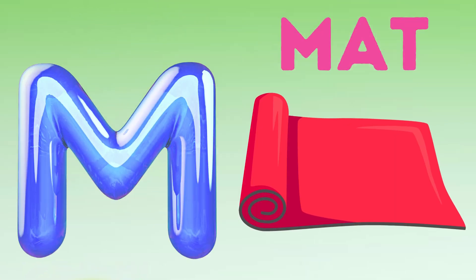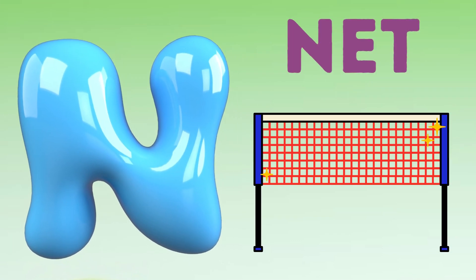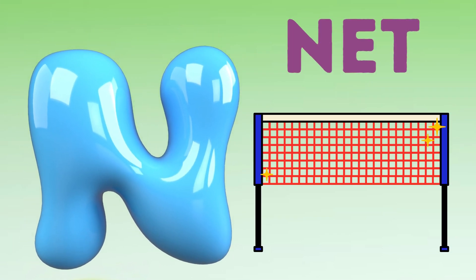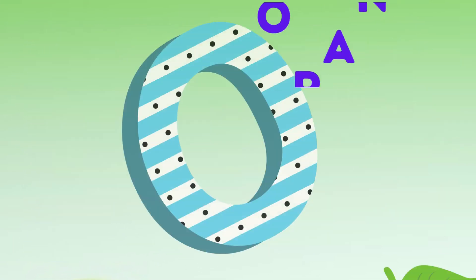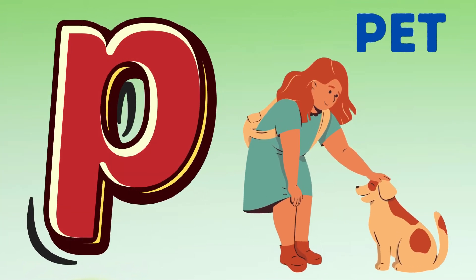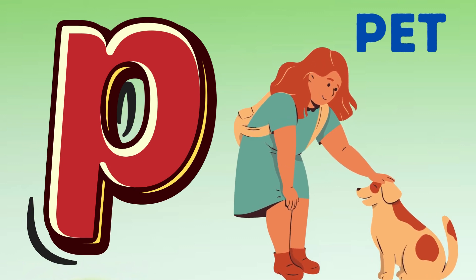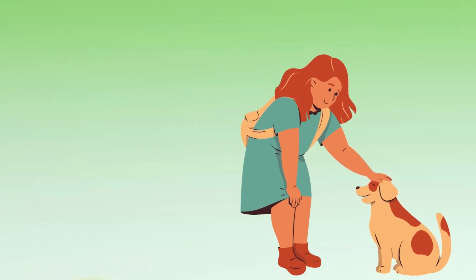M is for mat, m-m-mat. N is for net, n-n-net. O is for orange, o-o-orange. P is for pet, p-p-pet.